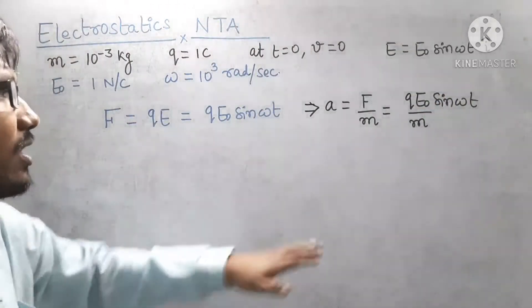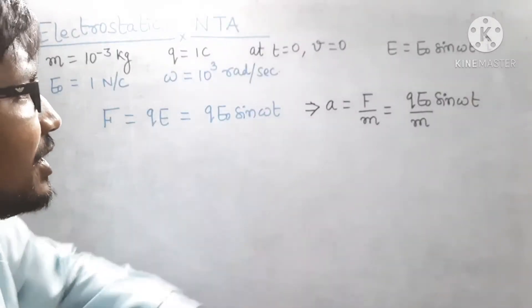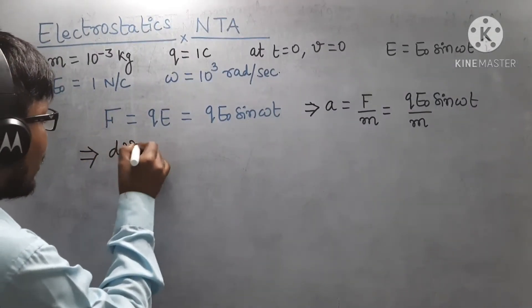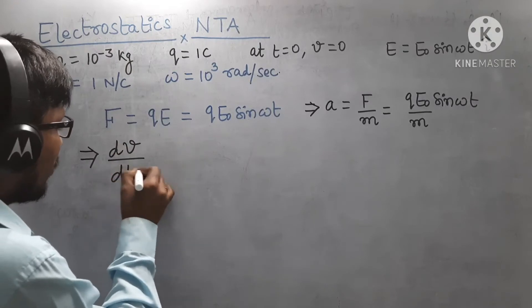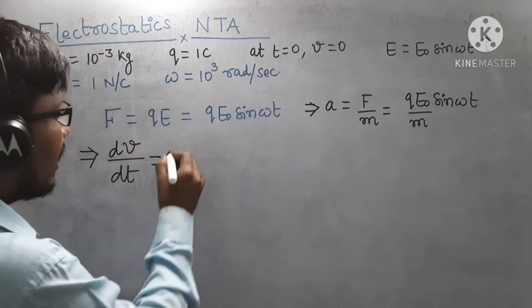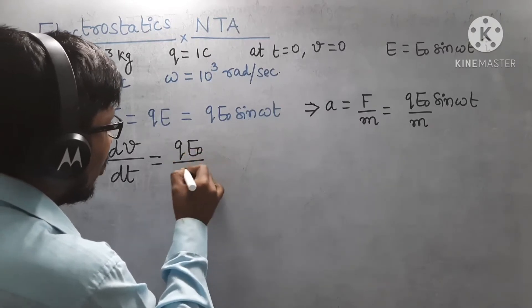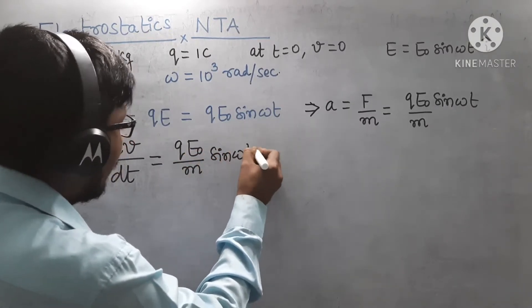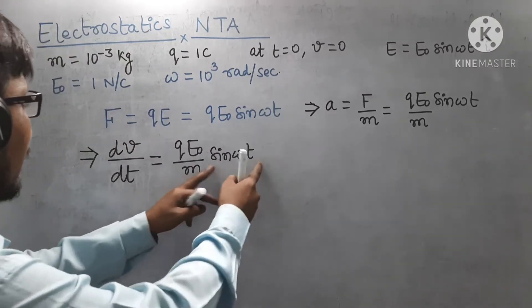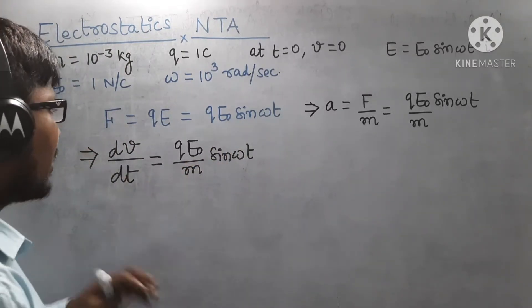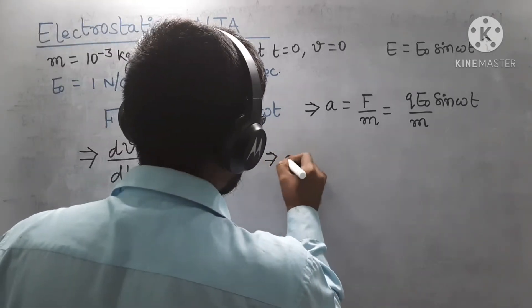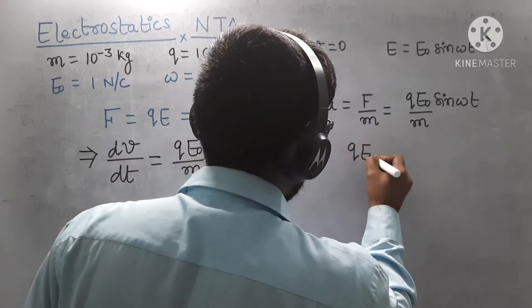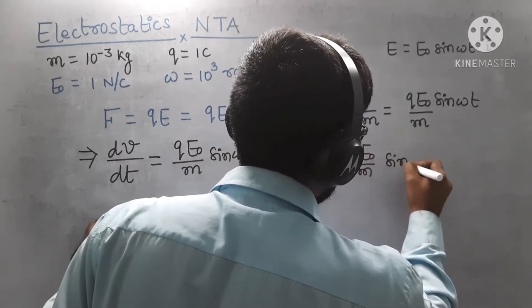Now we can write acceleration in differential form as dv/dt. So, replacing acceleration with dv/dt, we have dv/dt = (QE₀/m) sin(ωt). Taking dt to the right-hand side, we get dv = (QE₀/m) sin(ωt) dt.